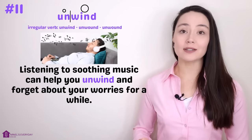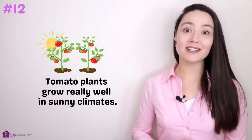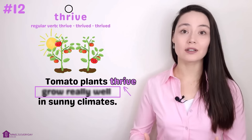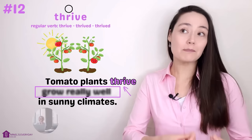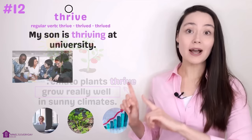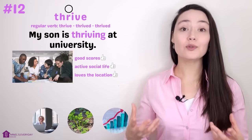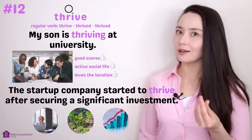Number twelve: tomato plants grow really well in sunny climates — tomato plants thrive. Thrive. When a person, plant, animal, or the economy thrives, it does very well — there's positive energy to it. My son is thriving at university: he's getting good scores on his exams, he has an active social life, he loves where he lives — he's thriving. The startup company started to thrive after securing a significant investment — they made over a million dollars in six months.